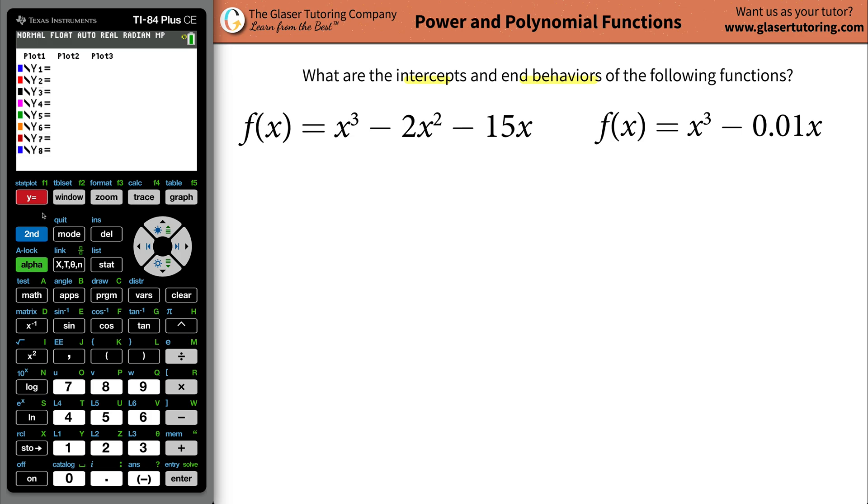First thing, go to your calculator, plug in the function. So we're going to do x raised to the third, hit the over arrow to bring the cursor back down, then minus. Hit the minus sign, not the negative sign, be careful. Minus 2x squared, and then minus 15x.